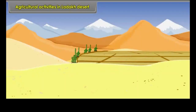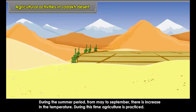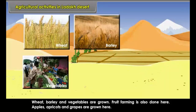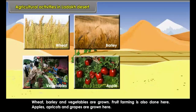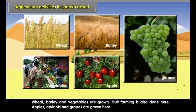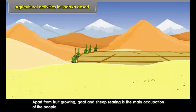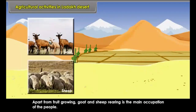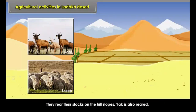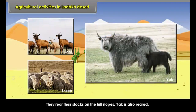Agricultural Activities in Ladakh Desert: During the summer period, from May to September, there is an increase in temperature and agriculture is practiced. Wheat, barley, and vegetables are grown. Fruit farming is also done here — apples, apricots, and grapes are grown. Apart from fruit growing, goat and sheep rearing is the main occupation of the people. They rear their flocks on the hill slopes. Yak is also reared.